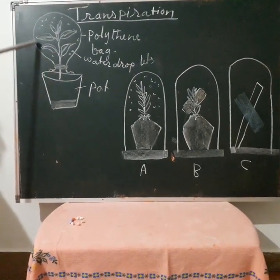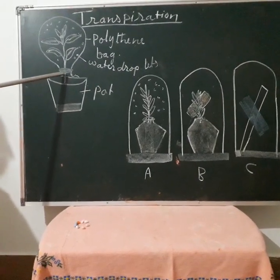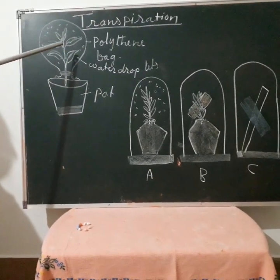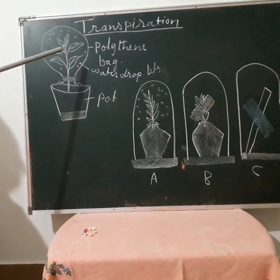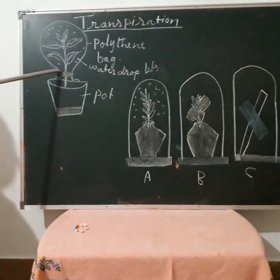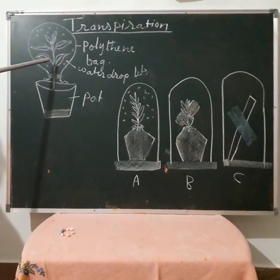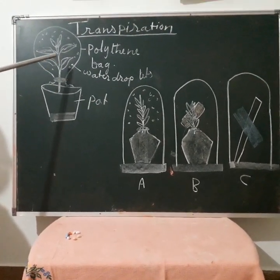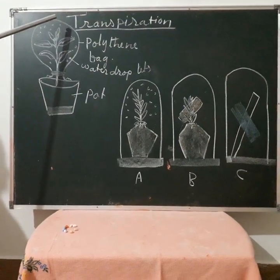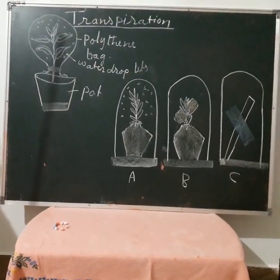The part above the ground is the aerial part. So, loss of water from the aerial part of the plant in the form of water vapor is known as transpiration.